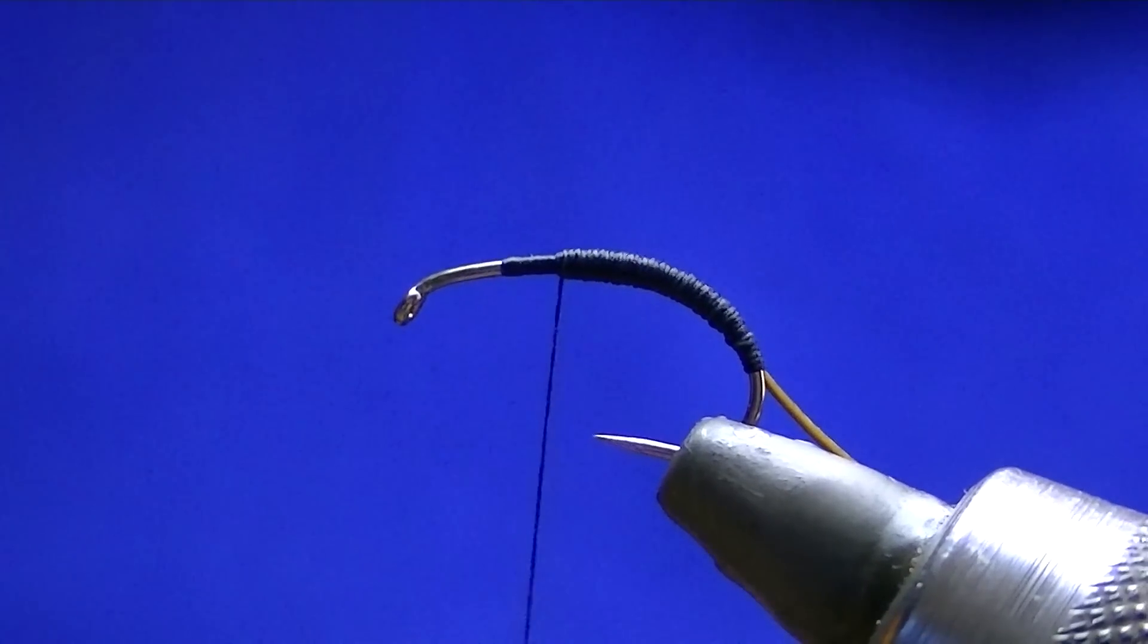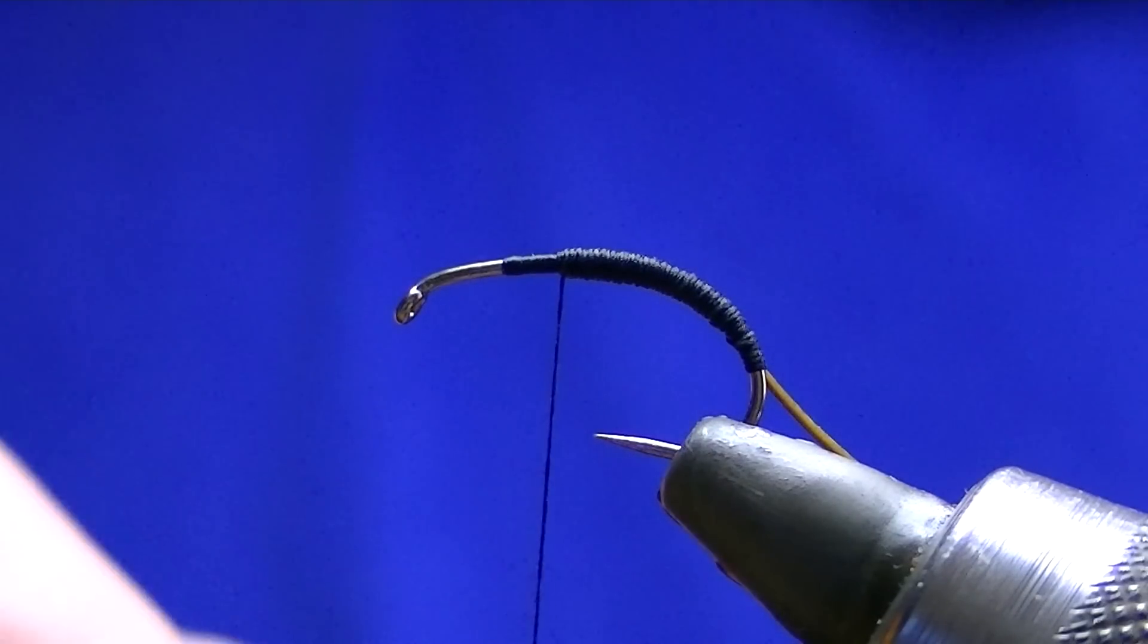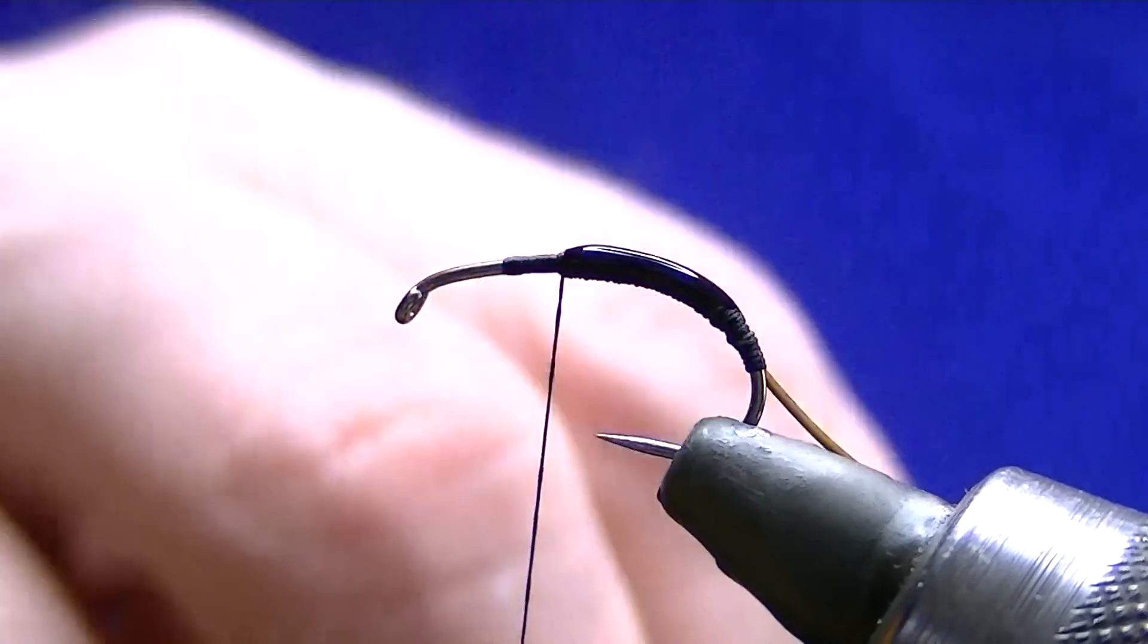Obviously if you're going to tie this on a smaller hook you use a thinner thread. Take the varnish, put some varnish on there.